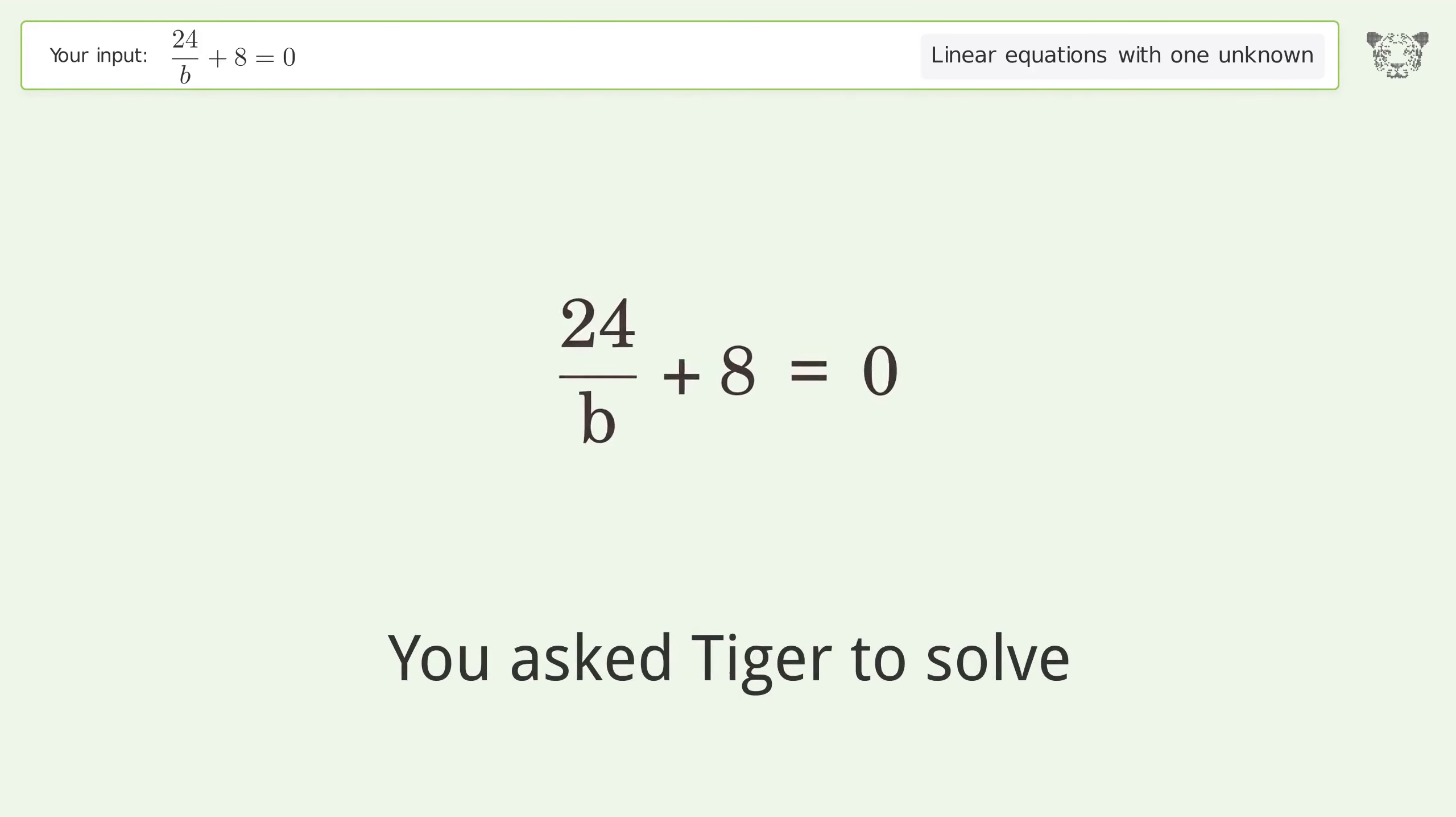You asked Tiger to solve this. This deals with linear equations with one unknown. The final result is b equals negative 3.